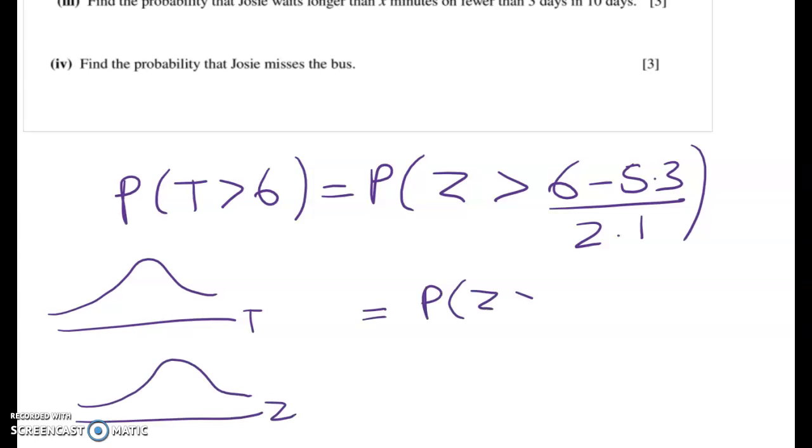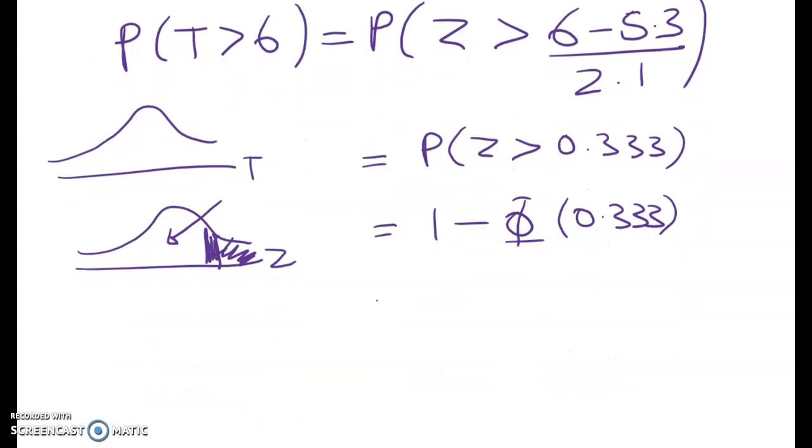Okay so in here what we're doing is we're saying we started with a t but we need to turn it into a standard normal z. So we're going to find the probability that z is greater than 0.333. This is 0.333 and we know that what we want is this upper tail but the tables give me this one here. So I find that probability by going 1 minus phi of 0.333 and that gives me an answer of 1 minus 0.6304 or 0.370.